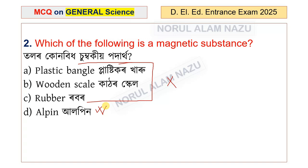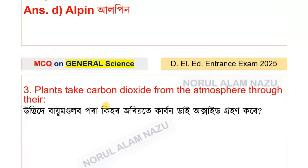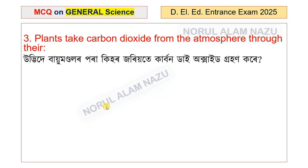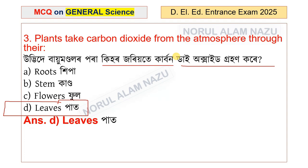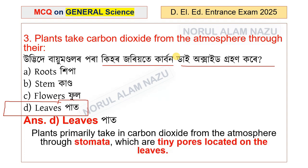Plants take carbon dioxide from the atmosphere. Plants primarily take in carbon dioxide from the atmosphere through stomata, which are tiny pores located in the leaves.